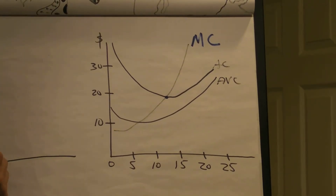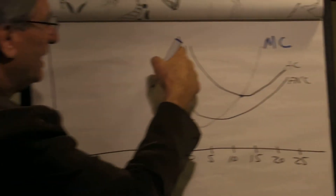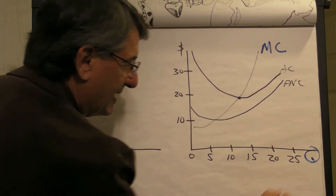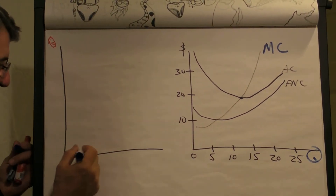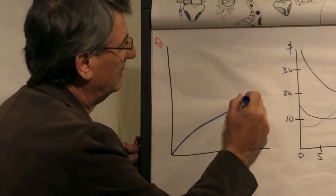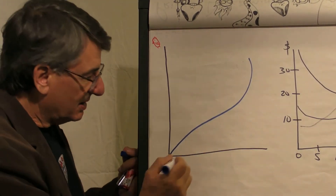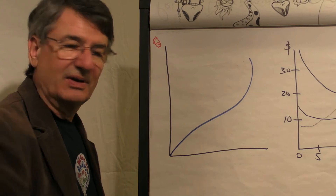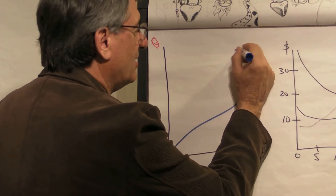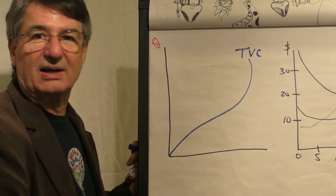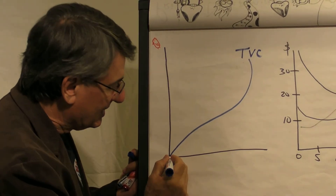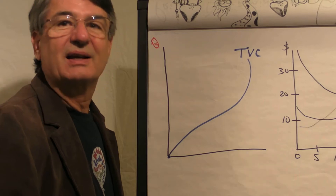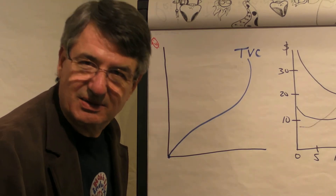Now, what about this one? What's on the axis? Dollars here. And on the horizontal axis? Quantity produced. What's this graph? Starts at the origin, has that squiggly shape. What do we call this graph? I believe it's total variable cost. How do you know it's total variable cost? Because it starts at the origin. Why does it have that squiggly shape? Because of the law of diminishing returns.